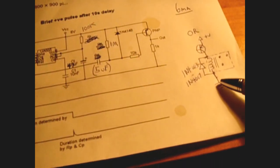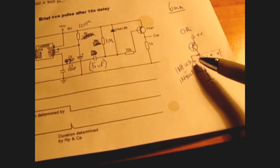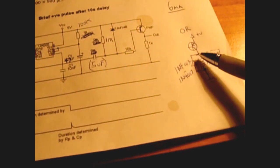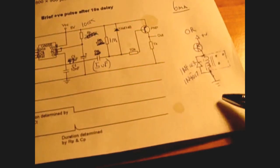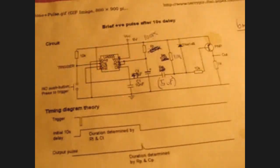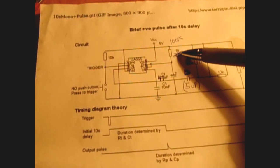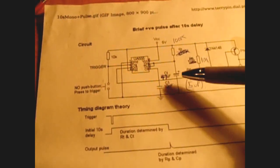Now this part of the circuit right here, which is RT and CT, this capacitor and this resistor, is used to determine how long of a delay you will have once you push the button and have to wait before the pulse is activated.